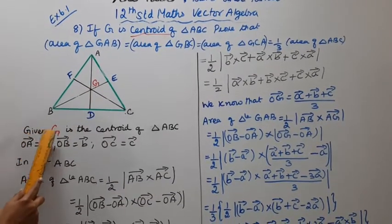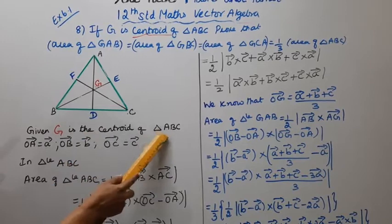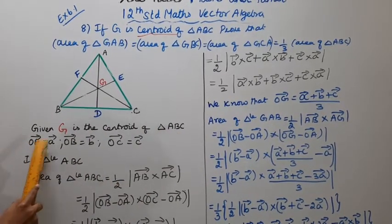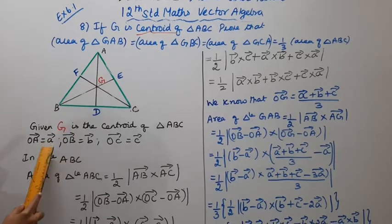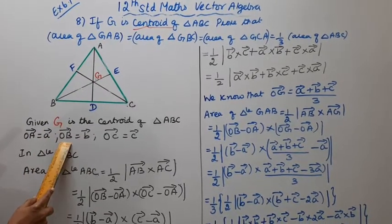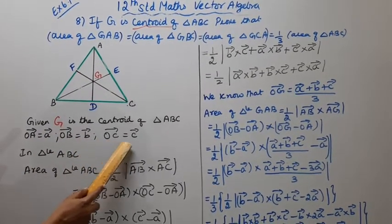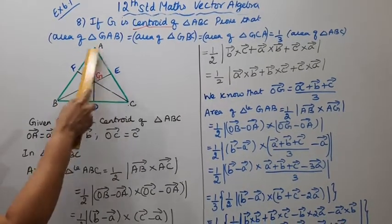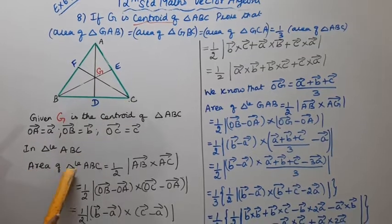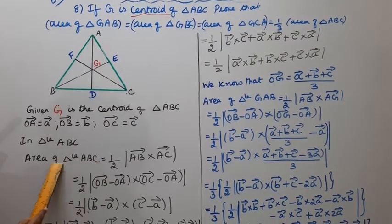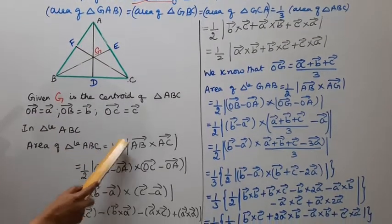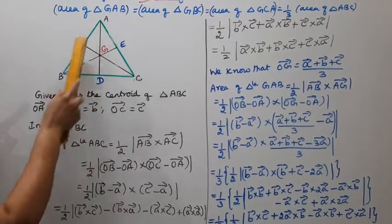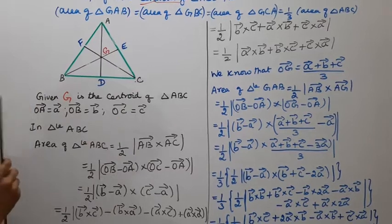Given: G is the centroid of triangle ABC. Let the position vectors be: OA vector = A vector, OB vector = B vector, OC vector = C vector. Now, the area of triangle ABC equals one-half times the modulus of AB vector cross AC vector.